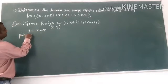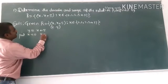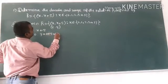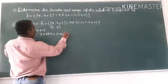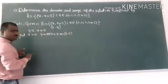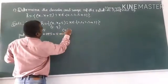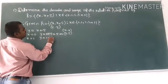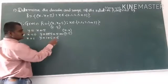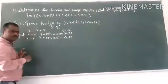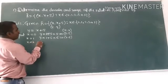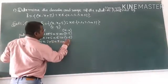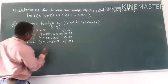First, put x equals 0, then y is 5, so we get (0, 5). When x is 1, y is 1 plus 5 equals 6, giving us (1, 6). When x equals 2, y is 2 plus 5 equals 7, so we have (2, 7).